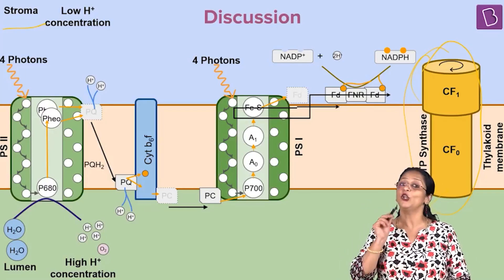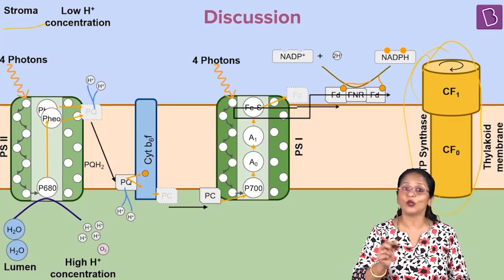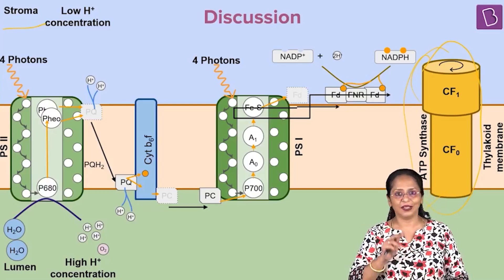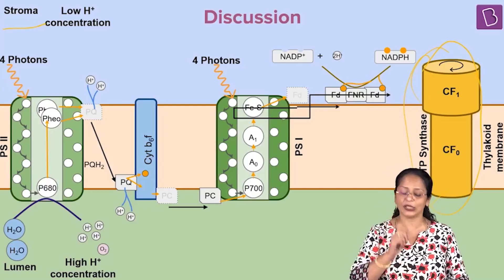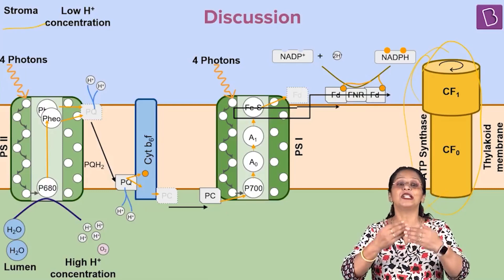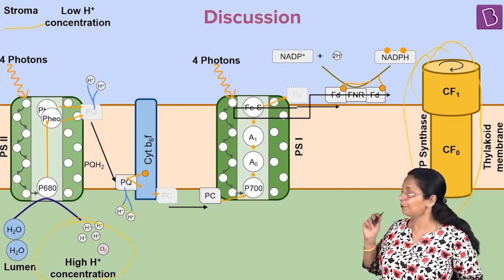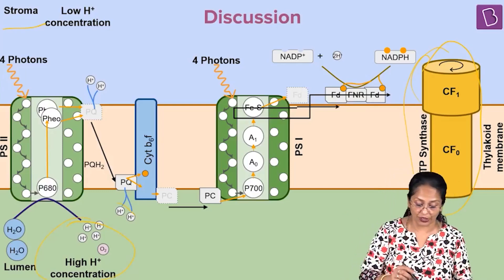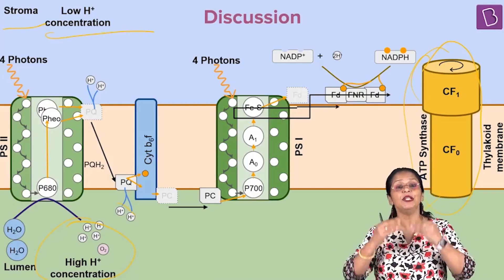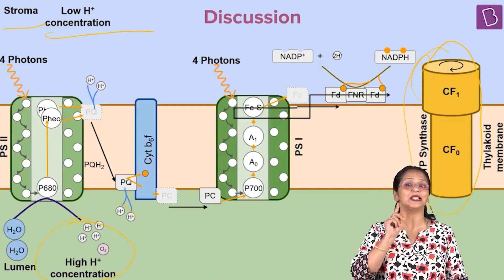ATP is synthesized because of the phosphorylation of ADP, adenosine diphosphate. That means addition of an inorganic phosphate group to ADP is how ATP is synthesized. There is a difference in the proton gradient between the thylakoid and what is present in the stroma — there is a higher concentration of proton ions in the thylakoid compared to the stroma. This causes the movement of protons across the membrane into the stroma, down the gradient. This is called chemiosmosis.